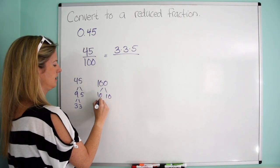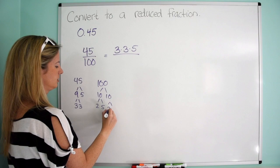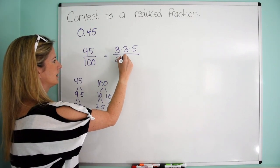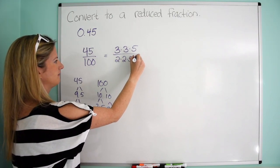100 is 10 and 10. So 2, 5, 2, 5. So 2 times 2 times 5 times 5.